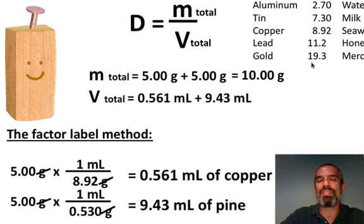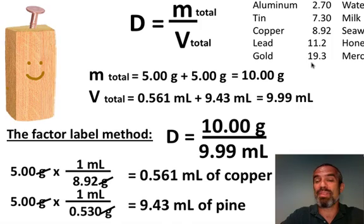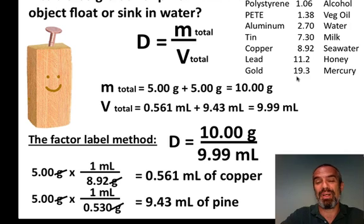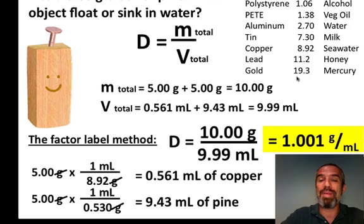We're going to assume we can just add those two volumes together. Now, that's not completely true. Probably when we hammered the nail into the pine, the pine around that nail hole got compressed a little bit. We're assuming it didn't. We're assuming that the pine got pushed to the side, that volume is additive just like mass is additive. That's not always true, but we're going to assume it to be the truth here. This gives us a volume of 9.99 milliliters, darn close to the mass of 10.00 grams. So, if our density then is 10.00 grams divided by 9.99 milliliters, well, that would give a density of 1.001 grams per milliliters, just slightly greater than water.